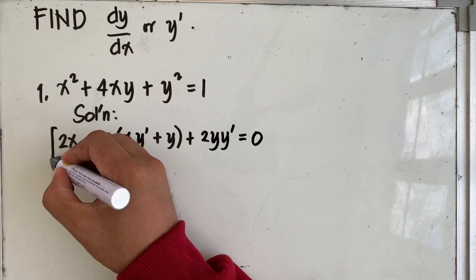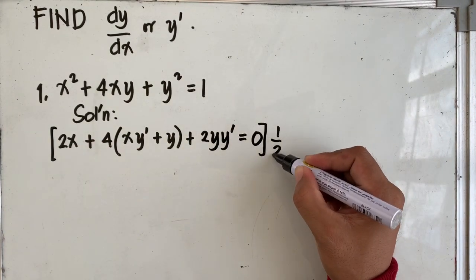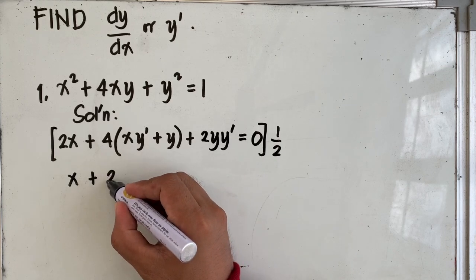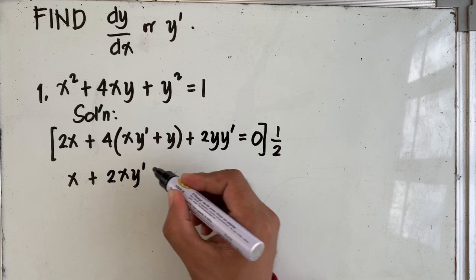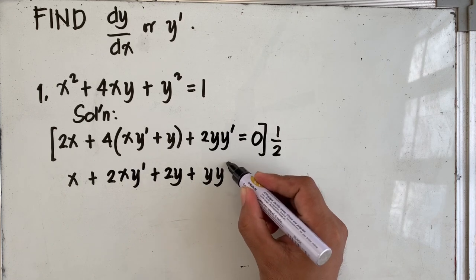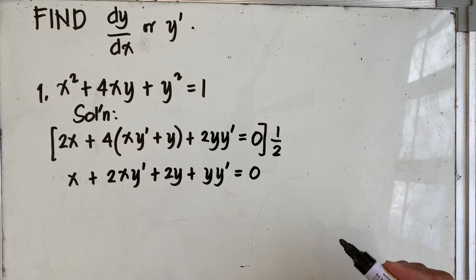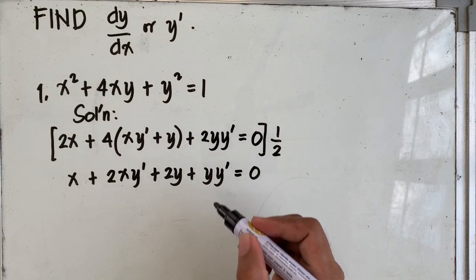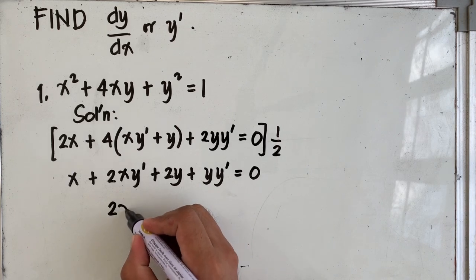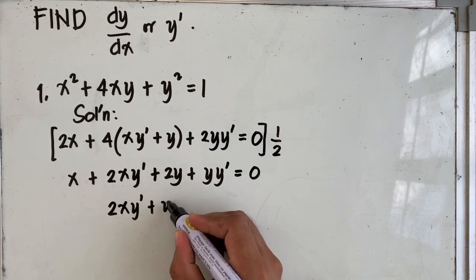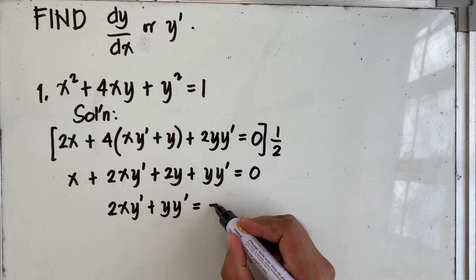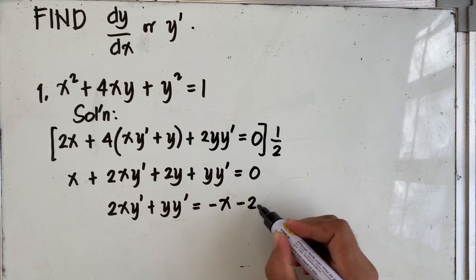Now we multiply both sides by one half. So we have x plus 2, and we distribute 2, giving 2xy prime plus 2y plus yy prime equal to 0. We then retain those terms with y prime at the left side of the equation and transpose the other two terms to the right side. So we now have 2xy prime plus yy prime equal to negative x minus 2y.